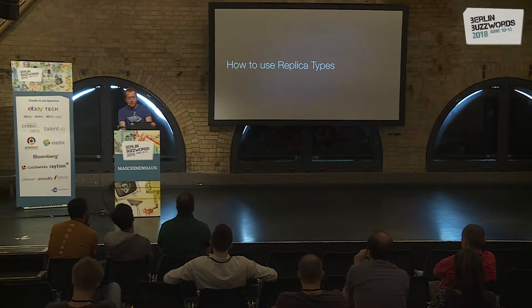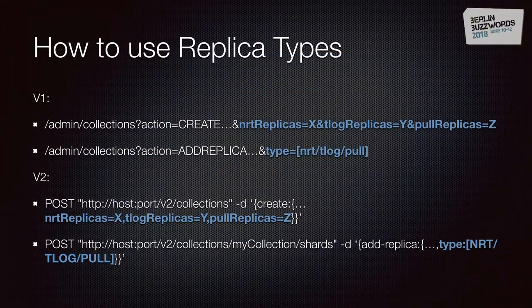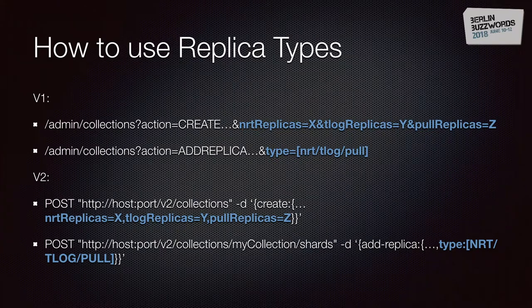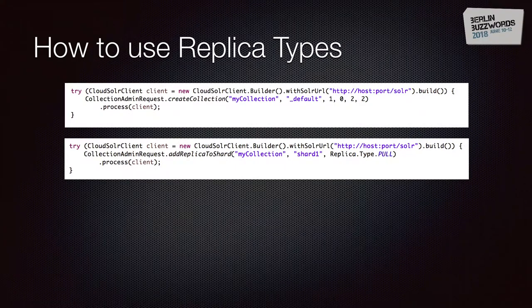Using replica types is straightforward. When you create a collection or shard, you can specify the number of replicas for each type. When adding a replica, you can specify the type. This is backward compatible — if you don't specify types and just use replication factor, it defaults to NRT, the existing type before Solr 7. There's also a v2 API option and SolrJ support, where you specify the number of shards and the number of NRT, TLOG, and pull replicas. When adding a replica, you specify the type you want.